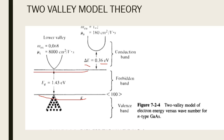In the upper valley, electrons occupy a larger density of states and their mobility is very low. When you apply a voltage that is less than the lower valley threshold, all the electrons remain present inside the lower valley.